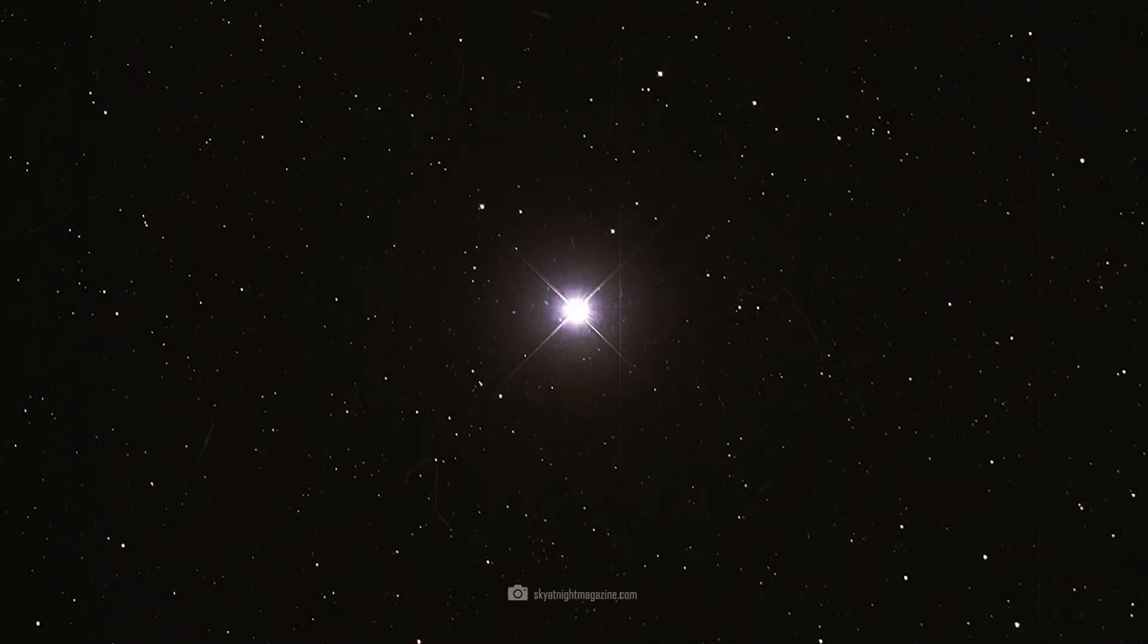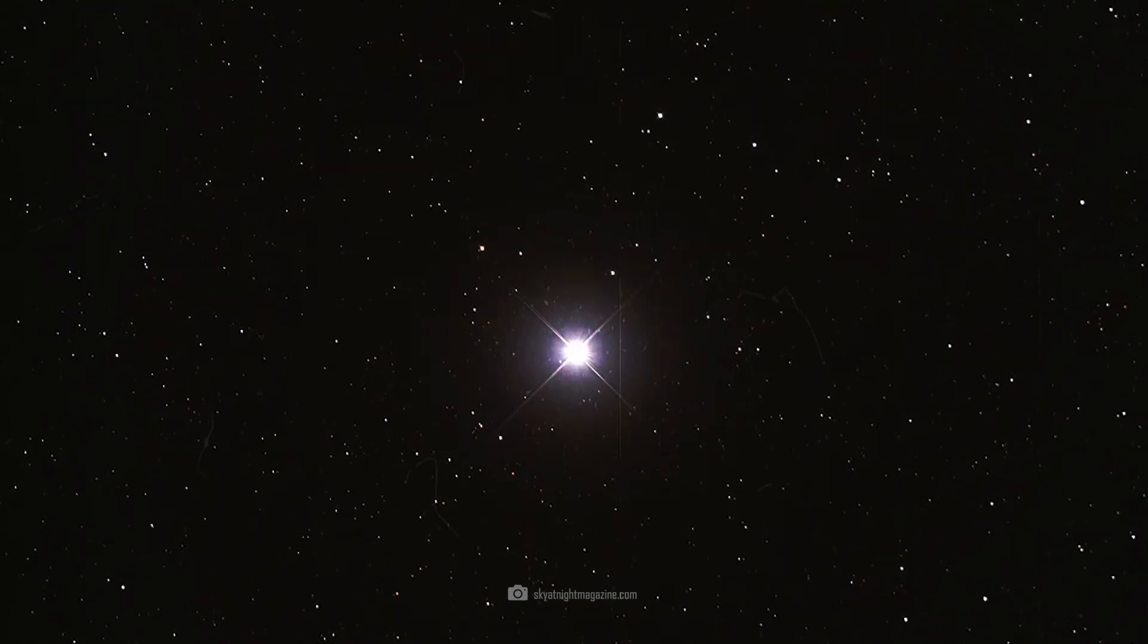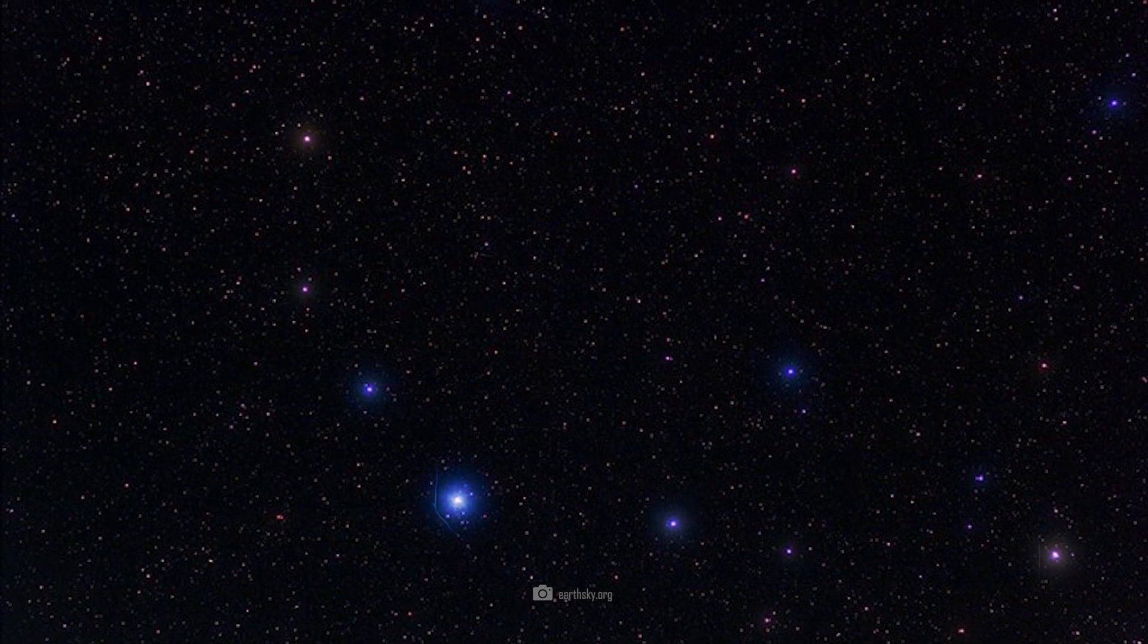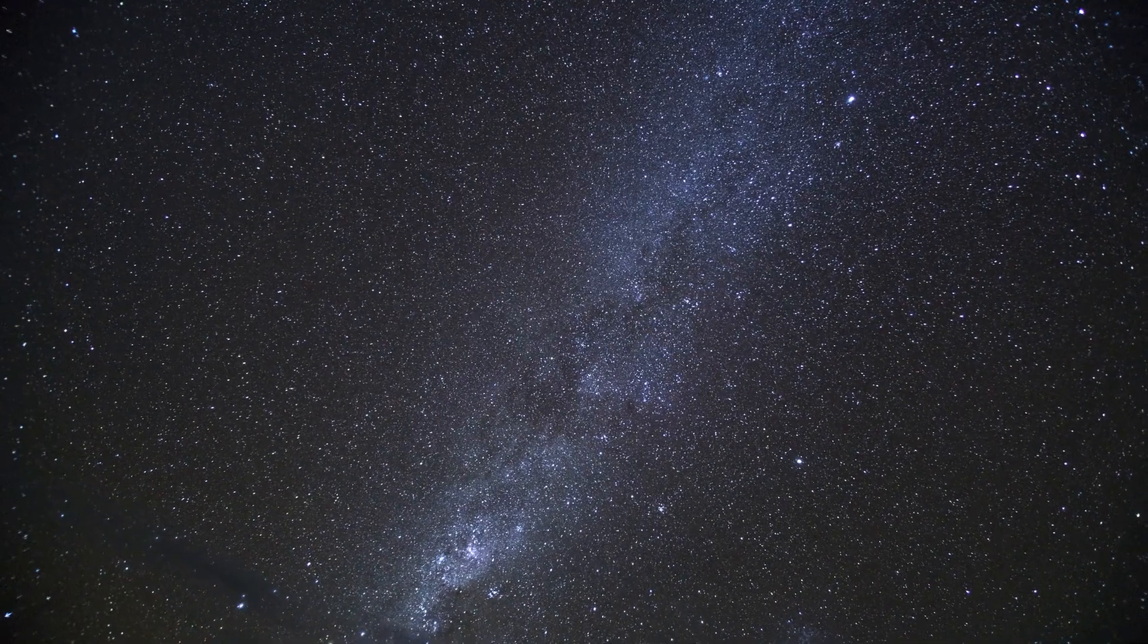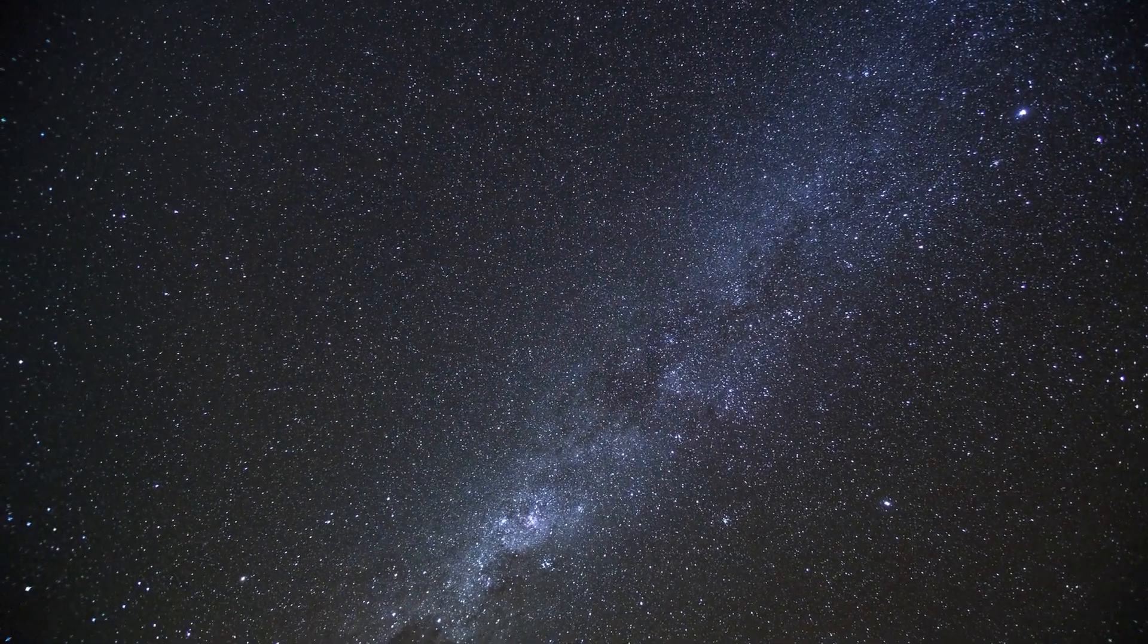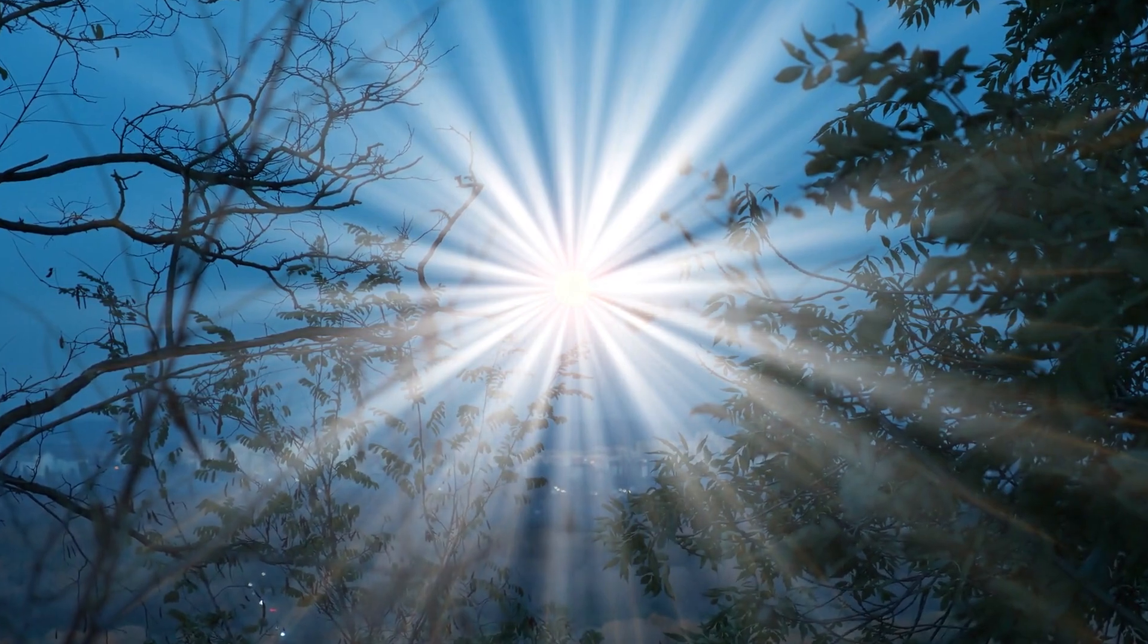The brightest star at the top of the arc is Alphecca, sometimes referred to as Gemma. From Alphecca, you can easily trace the other stars of the arc and easily recognize the entire constellation of the Northern Crown. It's best to look in that direction now and memorize the constellation. After the explosion, a very bright new star will be visible there. This is the Nova. The best time to see the Nova will be late in the evening when Corona Borealis is high in the sky.